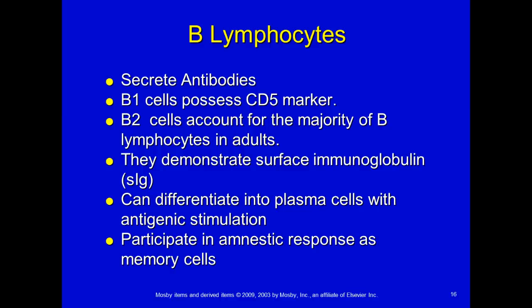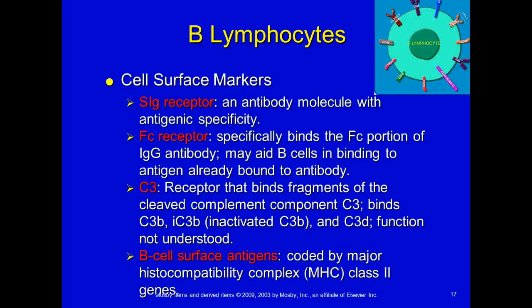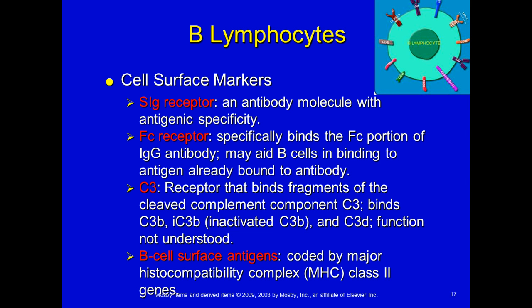B lymphocytes secrete antibodies and have different CD markers. B1 cells possess the CD5 marker. B2 cells account for the majority of B lymphocytes, demonstrate surface immunoglobulin, can differentiate into plasma cells with antigenic stimulation — plasma cells release antibody — and participate in the anamnestic or secondary response as memory cells. B lymphocytes have cell surface markers including a surface immunoglobulin receptor with antigenic specificity, an Fc receptor that binds the Fc portion of immunoglobulin, a C3 receptor that binds fragments of cleaved complement, and B cell surface antigens coded by MHC class 2 genes.